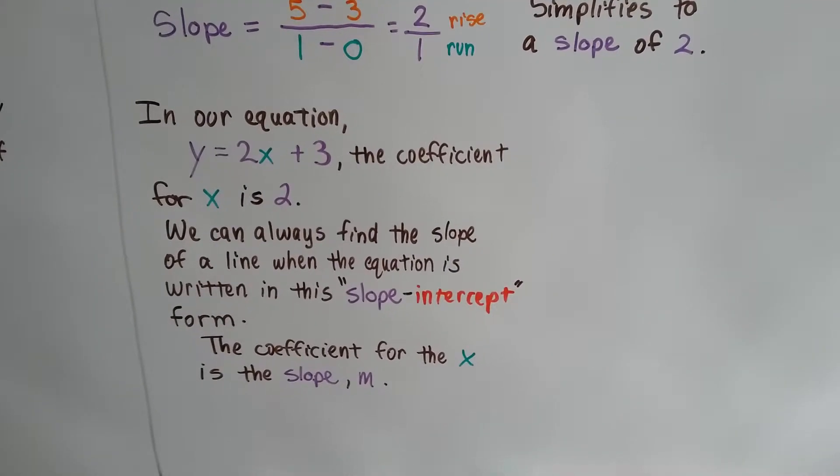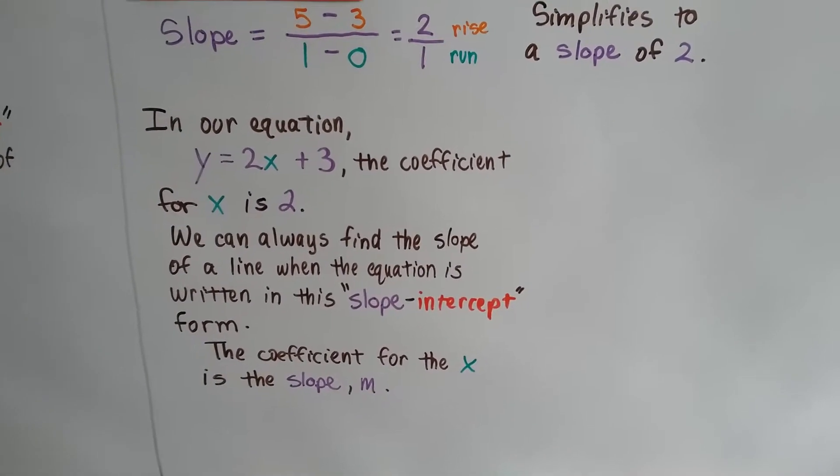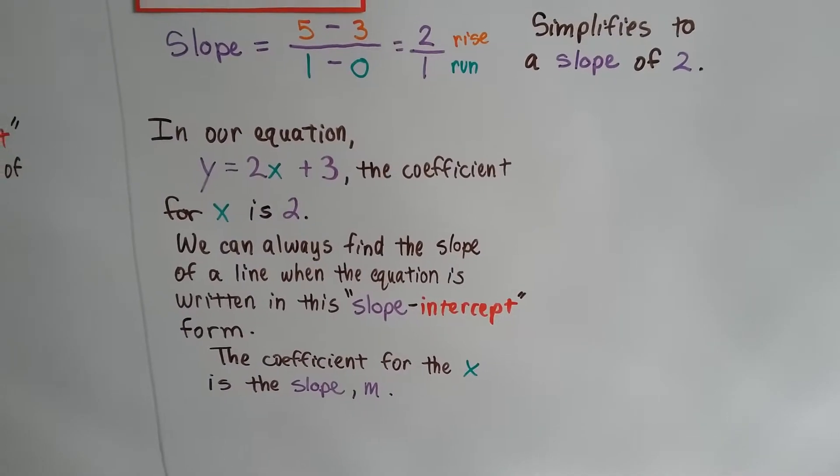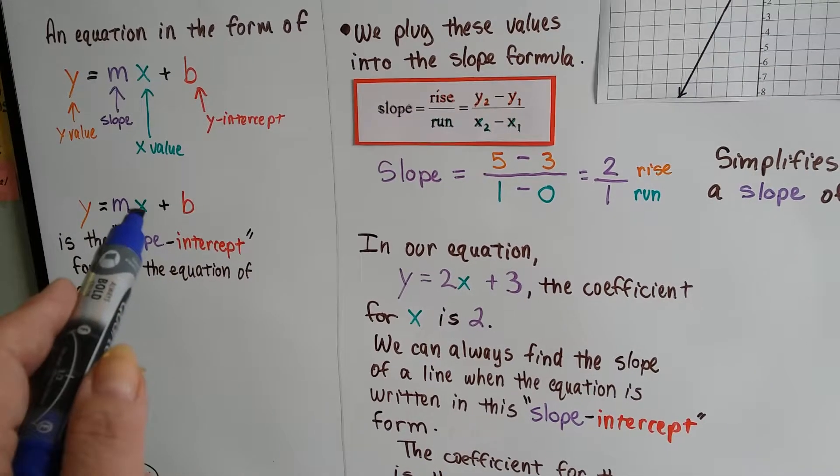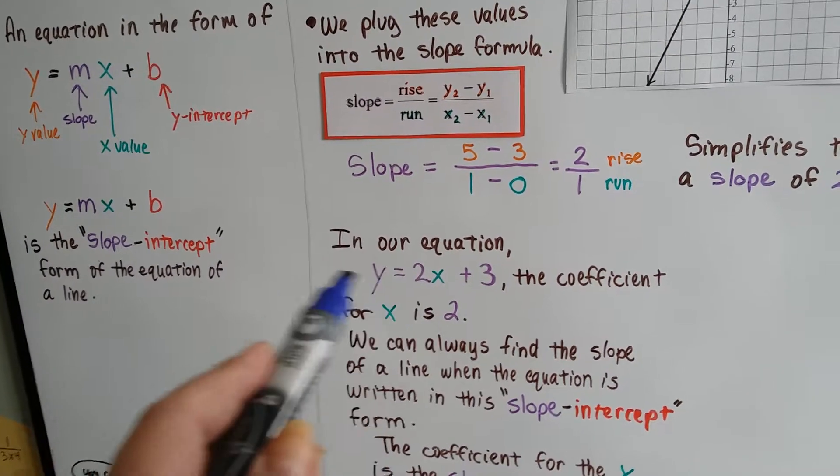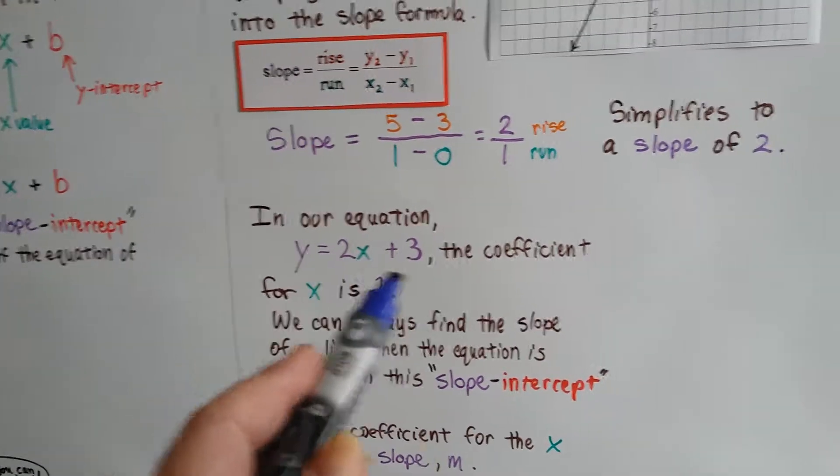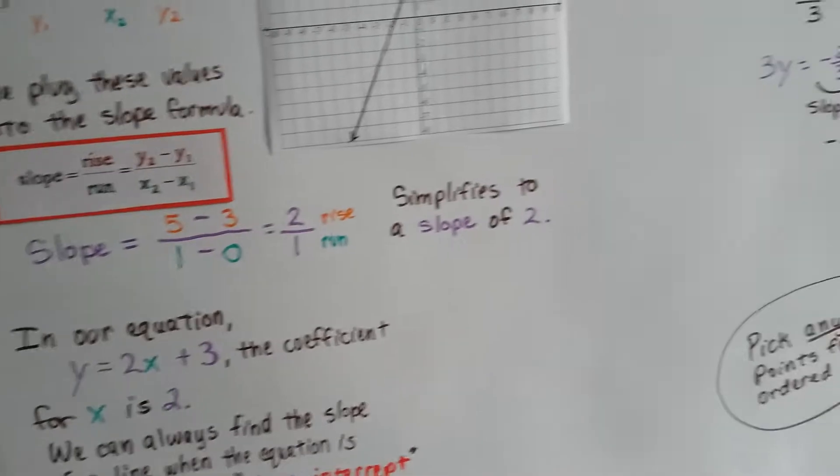We can always find the slope of a line when the equation is written in the slope-intercept form, because the coefficient for x is the slope. It's m. It's an m here, but it's the coefficient for x. That's the actual slope.